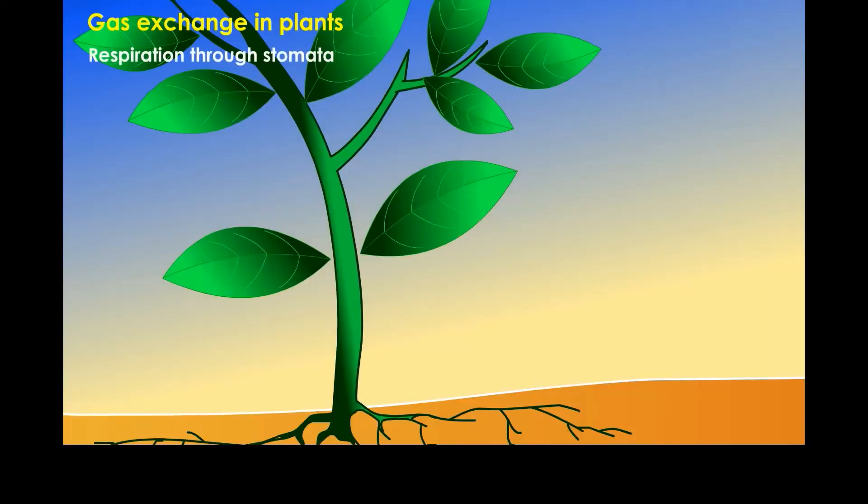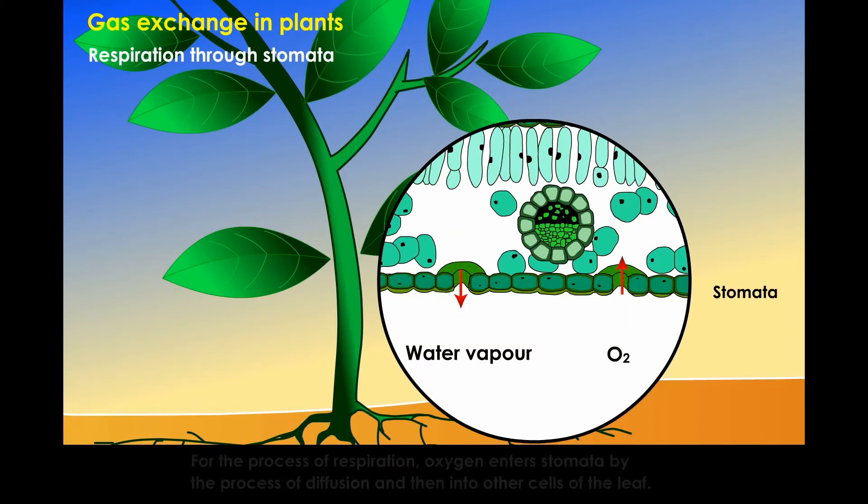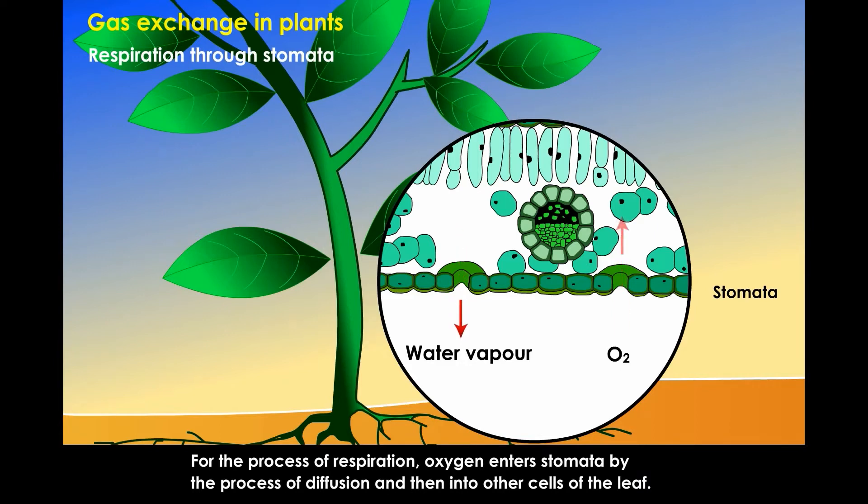Respiration through stomata. Stomata are small apertures found on the surface of the leaf. For the process of respiration, oxygen enters stomata by the process of diffusion and then into other cells of the leaf. This oxygen is utilized in the breakdown of glucose to carbon dioxide and water.